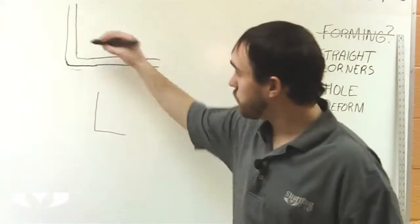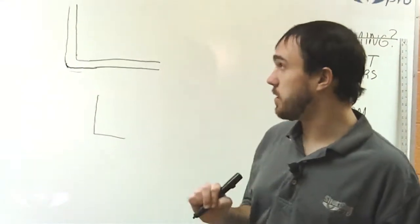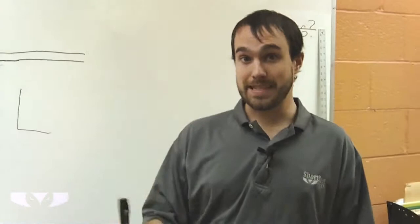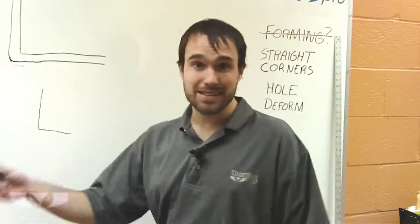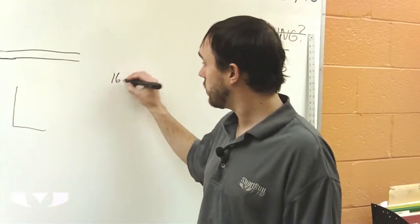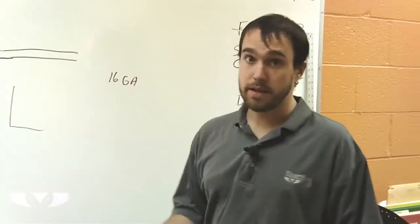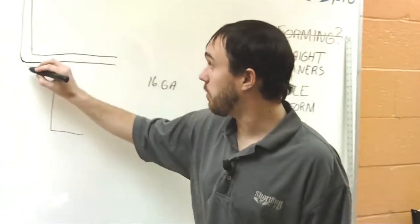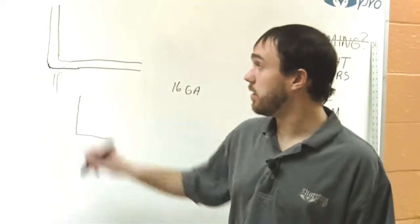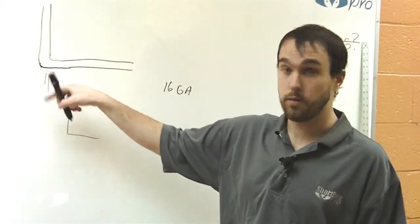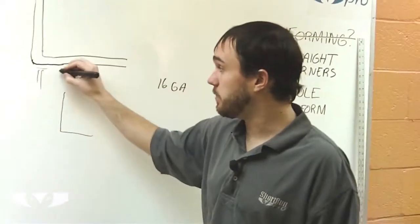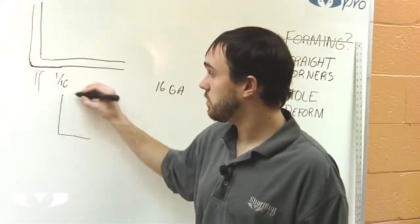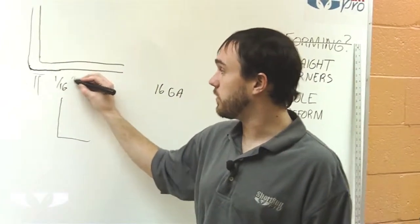As a rule of thumb, this radius, this inside radius is going to be the material thickness. So, if you're using, say, a 16 gauge material, then that means the distance from here to the end of that radius, or the end of the sloping radius part is going to be about a sixteenth of an inch, for example.